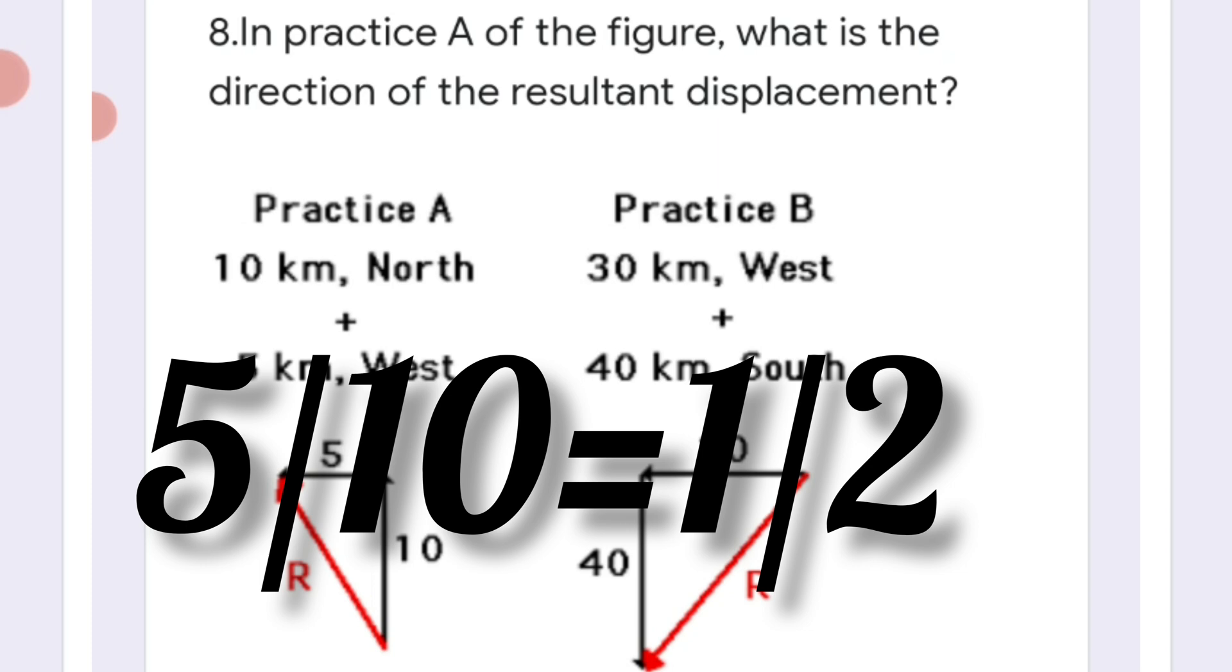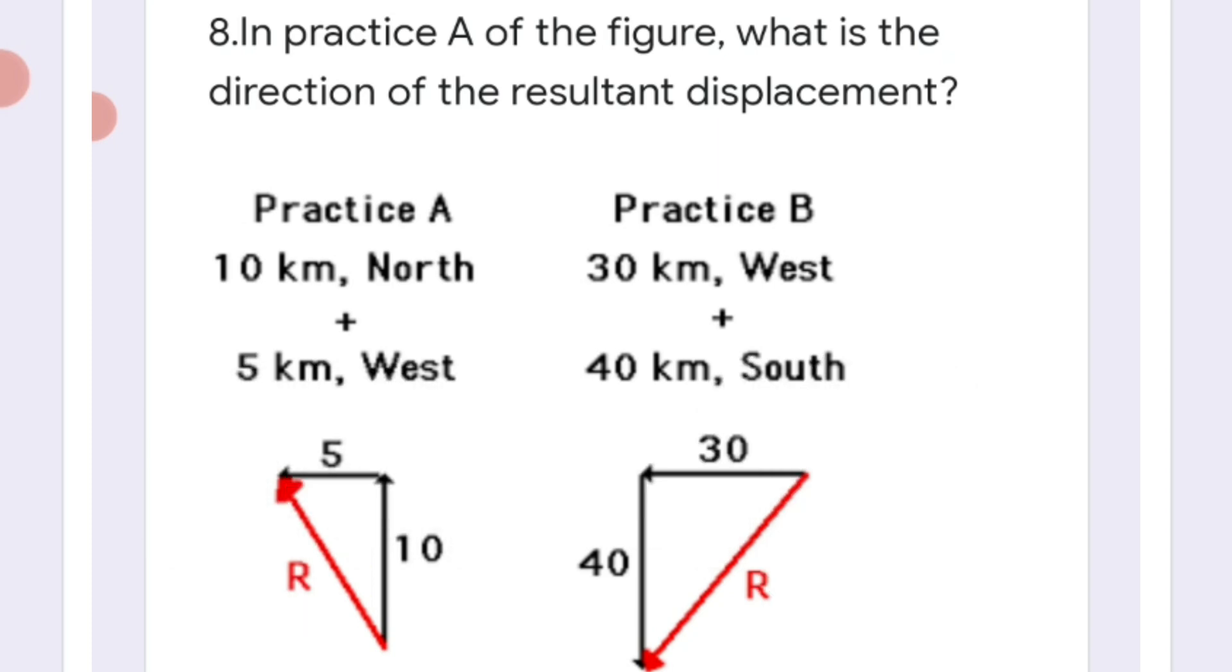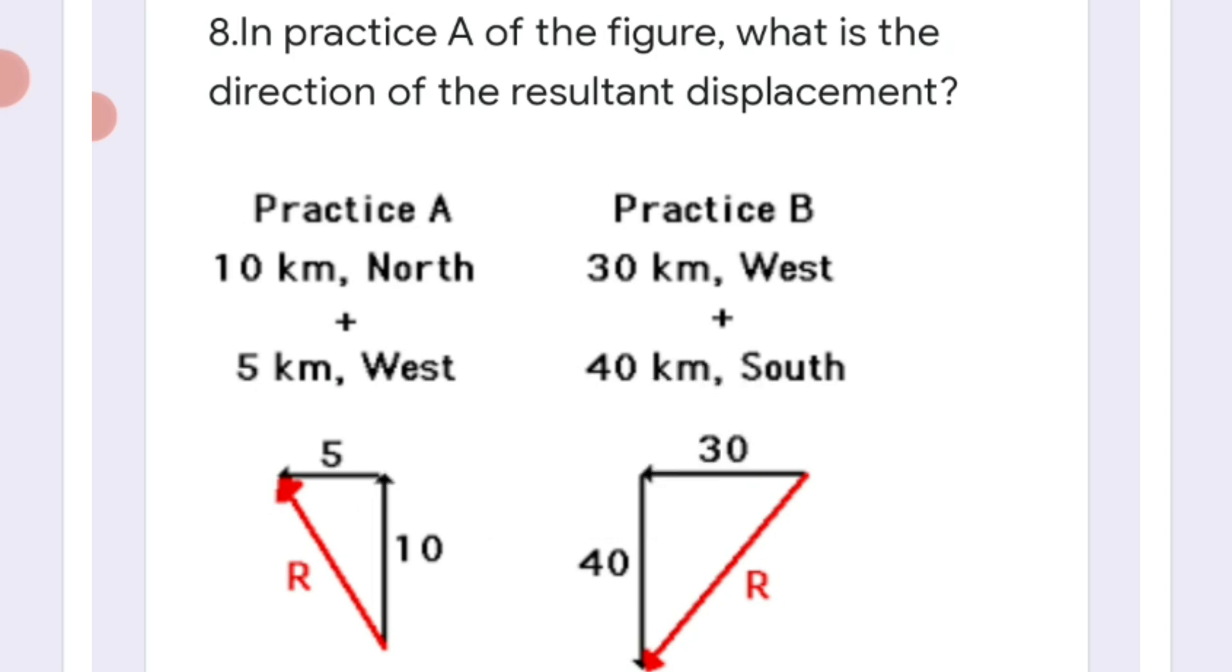Tan inverse 0.5, so tan inverse 0.5 will be 27 degrees, and it will be 27 degrees north of west. So that is the way how to find the direction in this kind of question: we have to use tan theta.